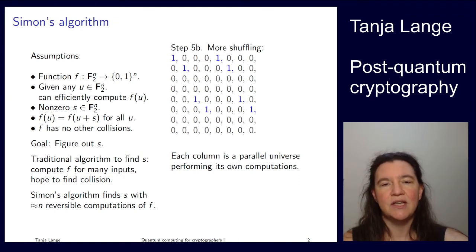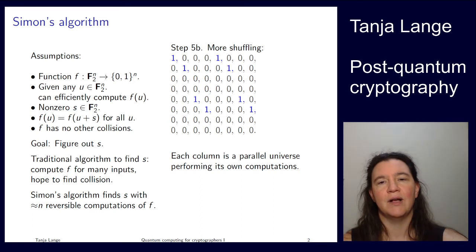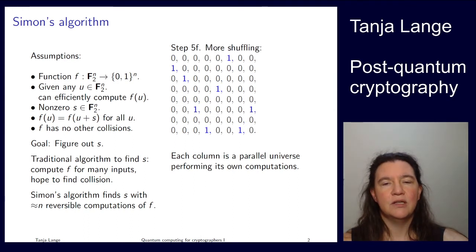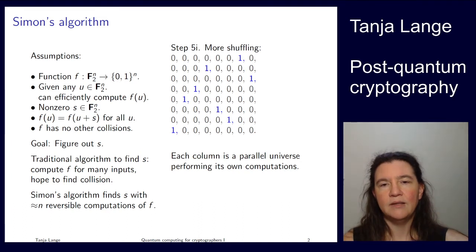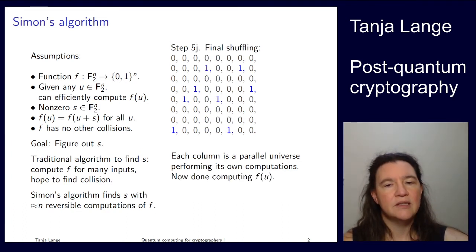And then you see that it permutes where those 1s are going. And so you can figure out what function F I've been computing here. Importantly, I'm only touching the second part, the last three qubits, meaning the 1 moves around in each column. So that's what I mean by it's its own universe.